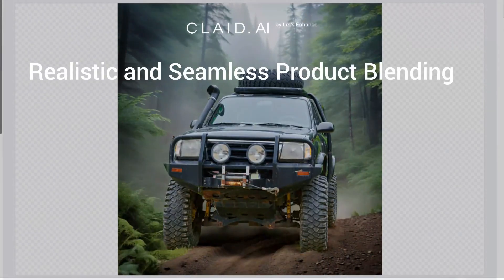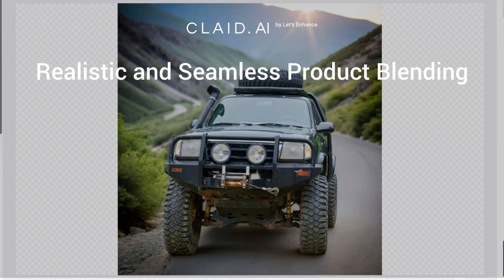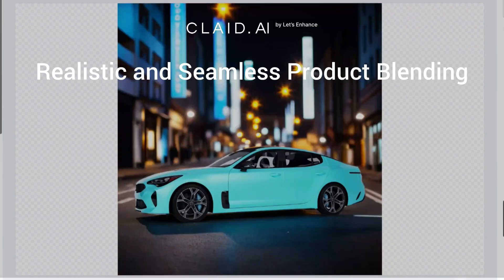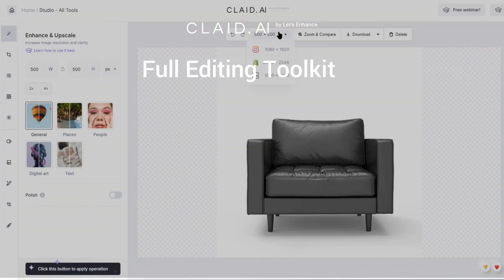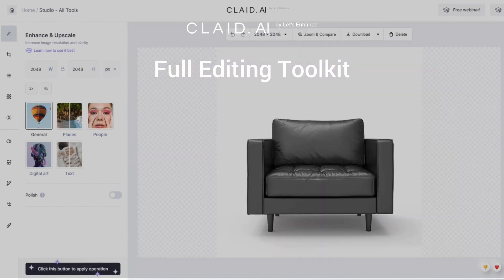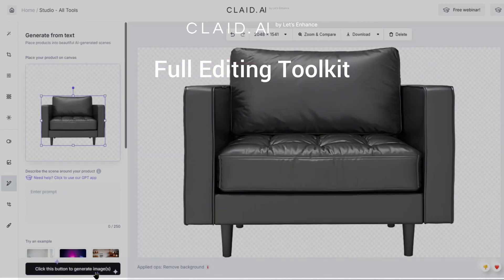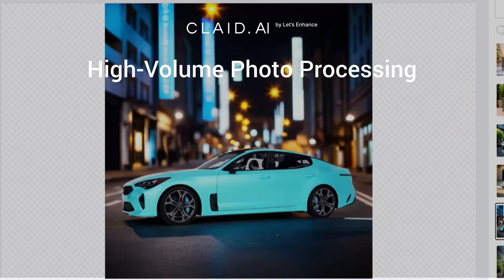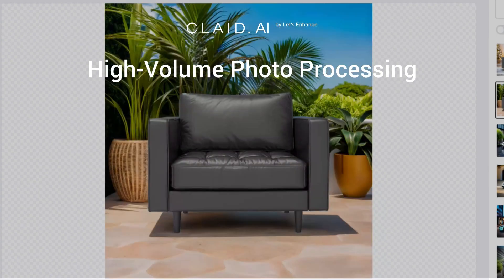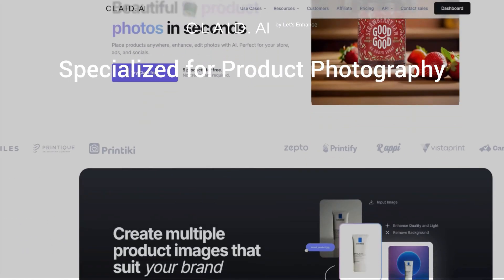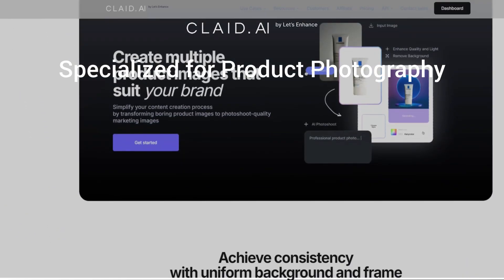Here are the key features of Clade AI. The images created with Clade blend your product into the scene in a way that looks realistic and natural. It has a full editing toolkit from image enhancement to background removal and generation. It has high-value photo processing if you need to work with a bunch of images, and the technology is specialized for product photography.